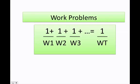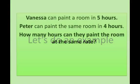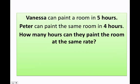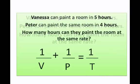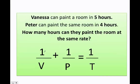Let's do an example to understand this formula. Vanessa can paint a room in five hours. Peter can paint the same room in four hours. How many hours would it take them to paint the room working together? I need to set up my formula: one divided by Vanessa's time plus one divided by Peter's time equals one over the total. V equals five, Peter equals four, and we're looking for the total time if they both work together.